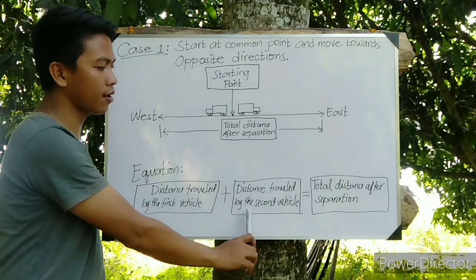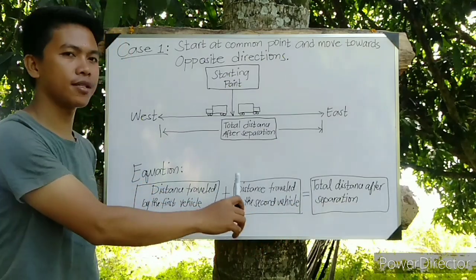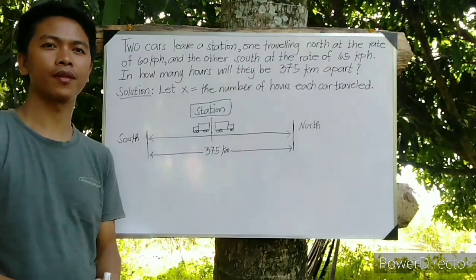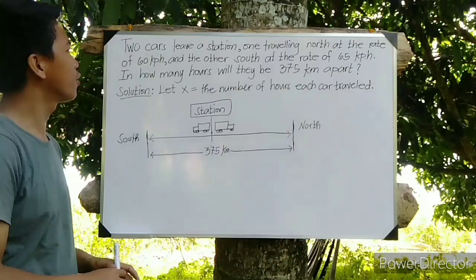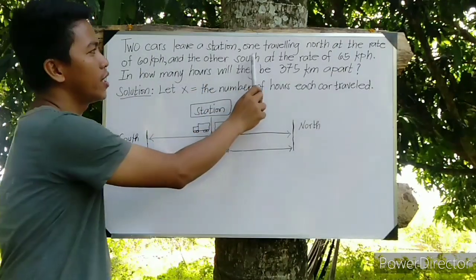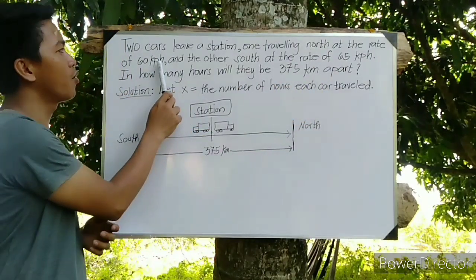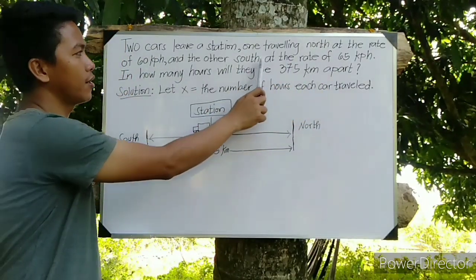For our problem, we have two cars leave a station, one traveling north at the rate of 60 kilometers per hour and the other south at the rate of 65 kilometers per hour.